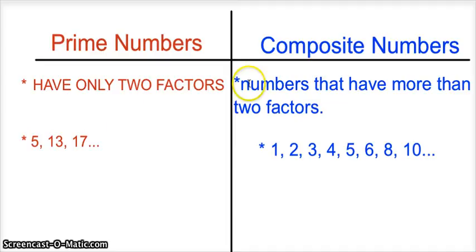Next thing! Next is prime numbers and composite numbers. We have only two factors. So prime numbers, here's the difference. Prime numbers only have two factors.